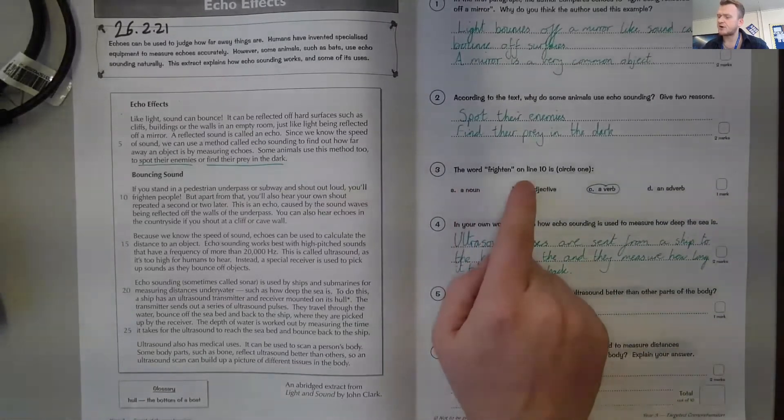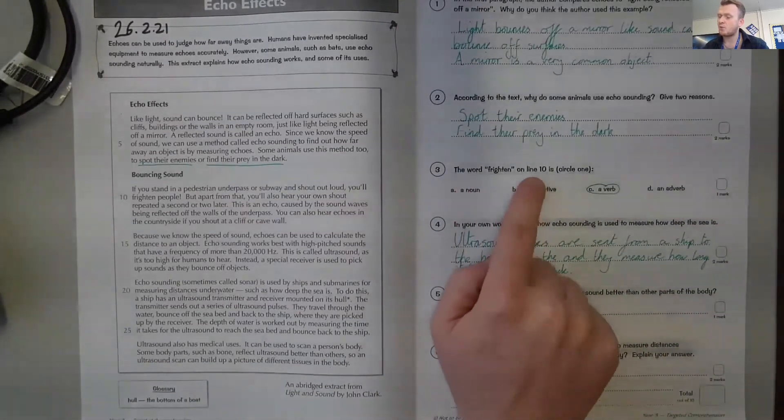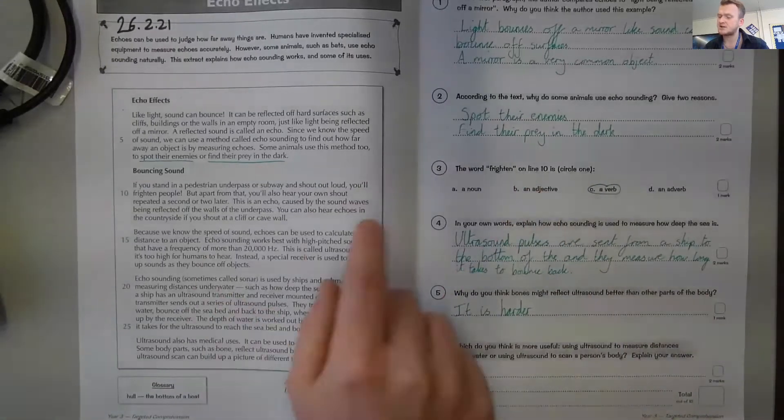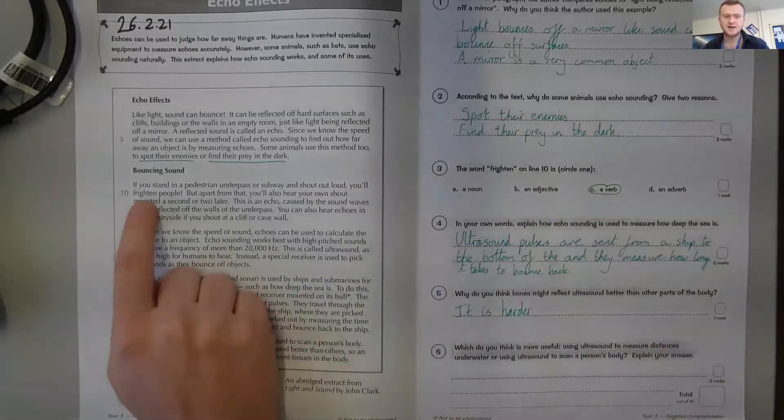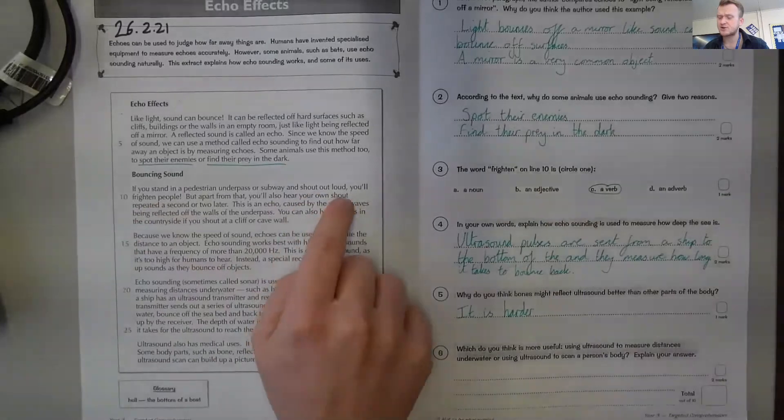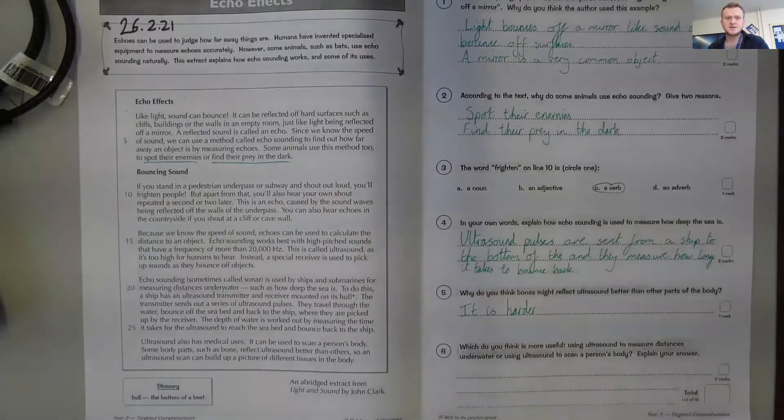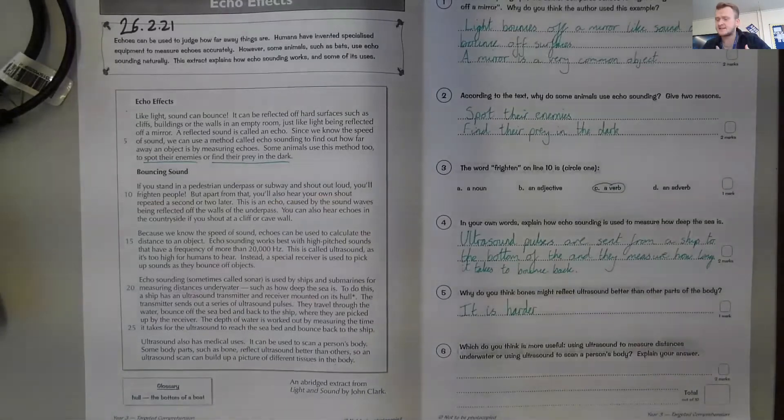Question three: The word frighten on line 10 is what? We need to look through line 10. It says frighten people. So if you shout out too loud you'll frighten people. If you frighten someone it is an act, it is a verb, it is an action.